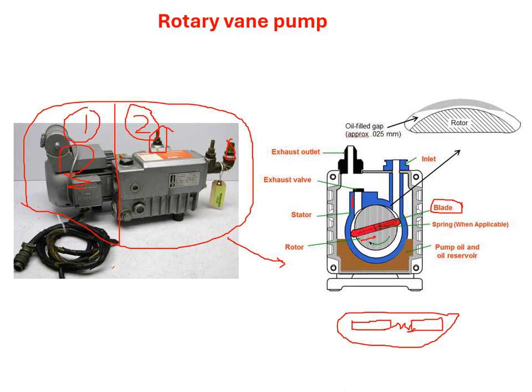At the bottom we have the pump oil and oil reservoir. This is the inlet from where all the gases from the chambers go inside this pump — they are sucked by this pump from the chamber, which may be connected here where we want to grow the thin films. We also have an exhaust valve and exhaust outlet, so whatever gases are sucked from the chamber will actually go out through this.